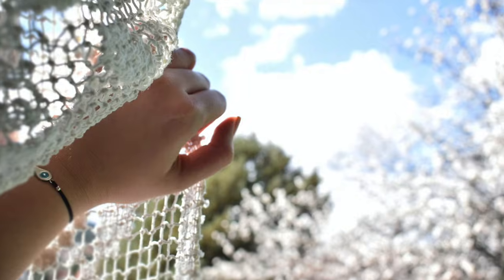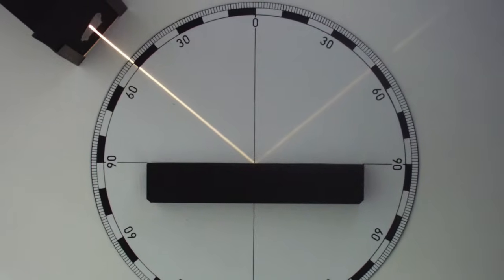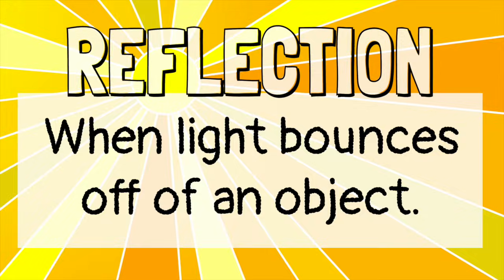Light rays always travel in a straight line. Light can pass through some objects, like glass. Sometimes when light hits an object, it bounces off. This is called reflection.